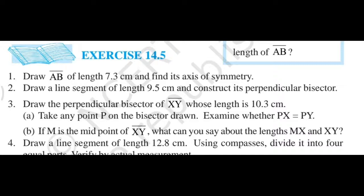You know that the axis of symmetry of any line segment is its perpendicular bisector. So here we are required to find out the axis of symmetry. We will draw a perpendicular bisector of 7.3 cm line segment.